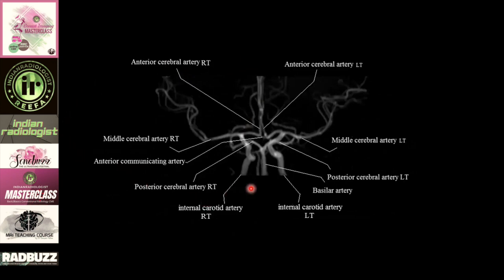In an antero-posterior projection, we can identify the anterior cerebral arteries and the middle cerebral arteries. From their origin to the first division is the M1 segment of your MCAs. Here is your anterior communicating artery — a very common site for small or even large aneurysms. You may find patients with subarachnoid hemorrhage along the sides of these arteries, and you can identify on MR sequences based on where the magnitude of blood is maximum, which area is most suspicious for aneurysm.